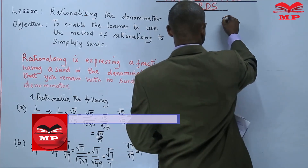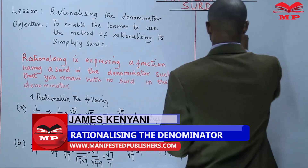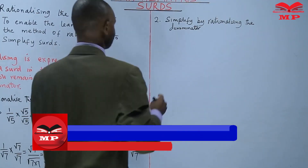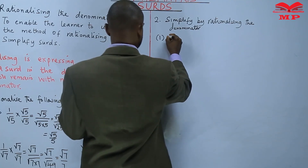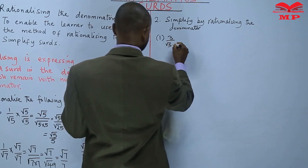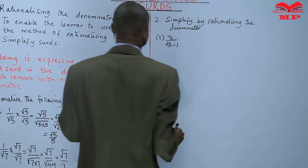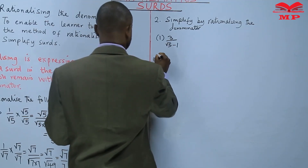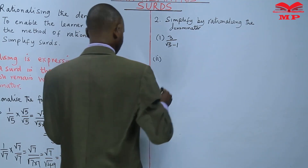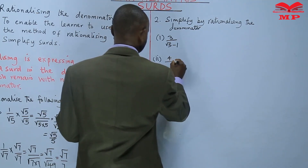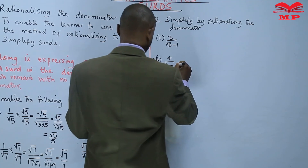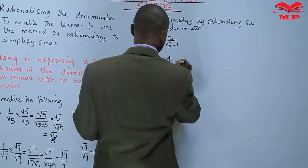In number 1, you are told 3 over square root of 5 subtract 1. And in number 2, we have 4 over 6 minus square root of 5.